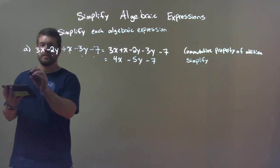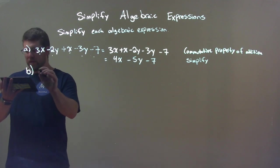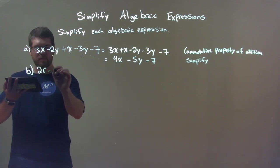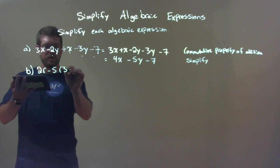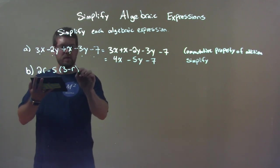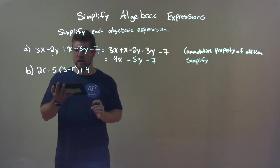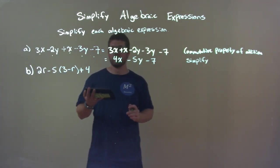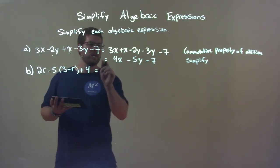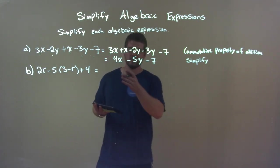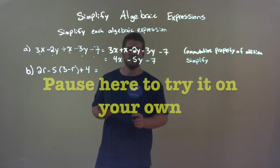Let's do another one. B. We have 2r minus 5 times 3 minus r plus 4. So pause this video. Try it yourself. And then compare answers. So pause it for a second and see what you do.